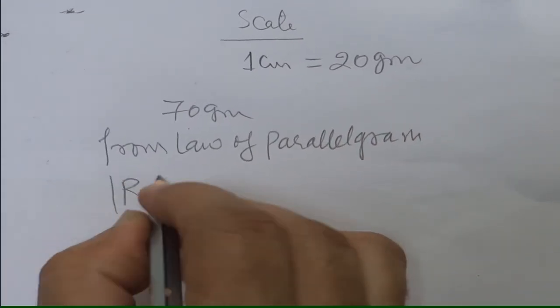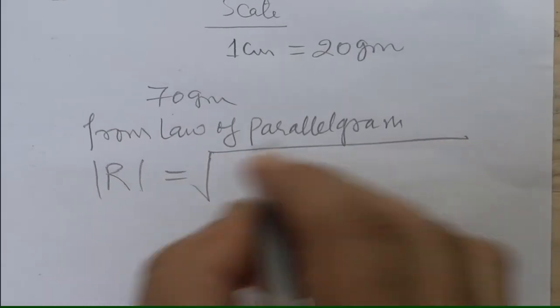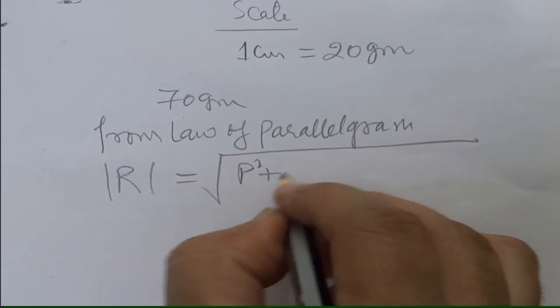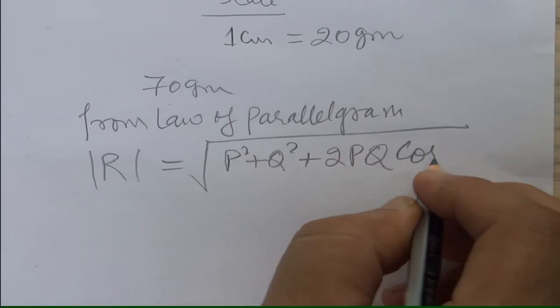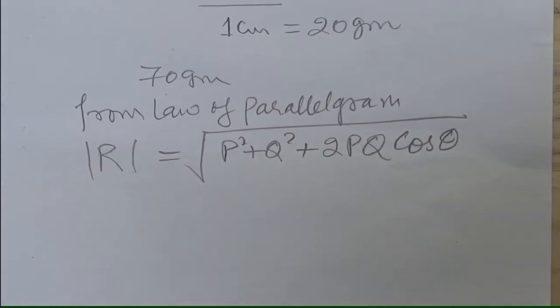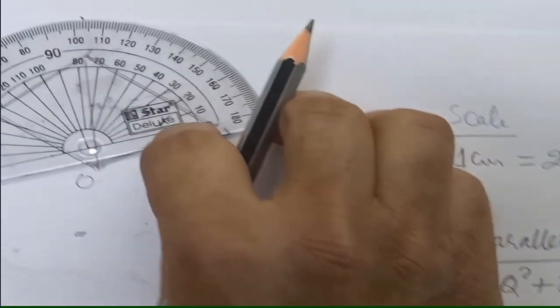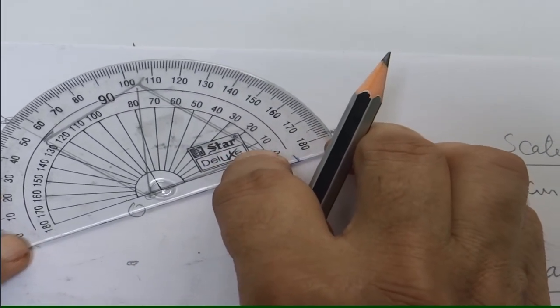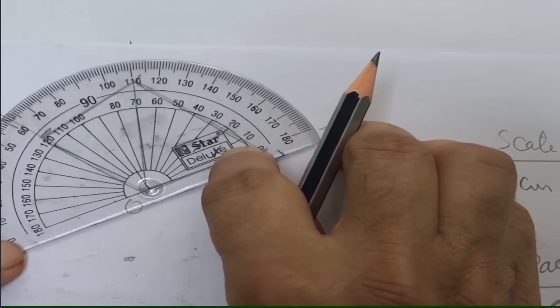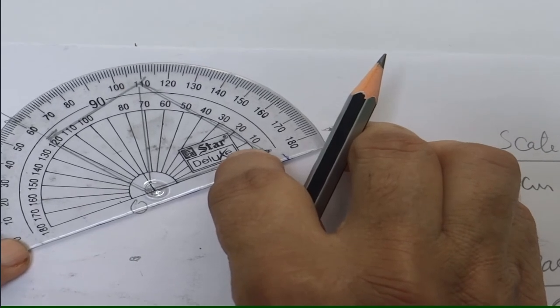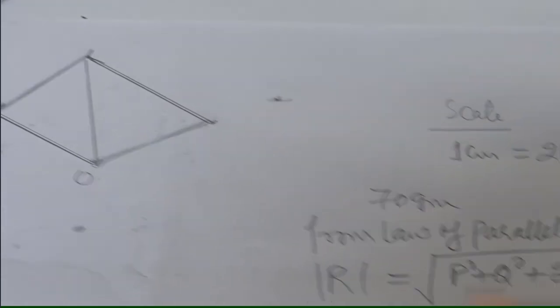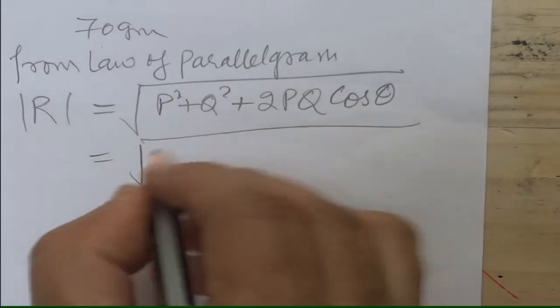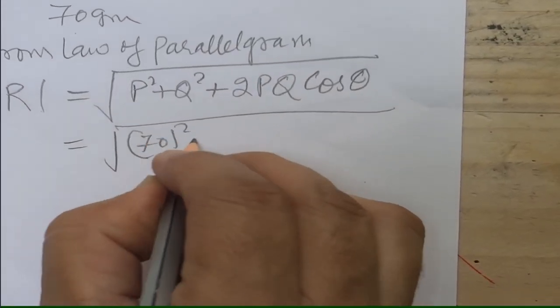So from law of parallelogram your formula is resultant magnitude is equal to square root of P² + Q² + 2PQ cos θ. Theta is an angle between these two line segments, that is 120. So 120 means 70 grams whole square, 70 grams whole square plus 2 into 70 into 70 cos 120 is minus 1 by 2, so this cancels this.